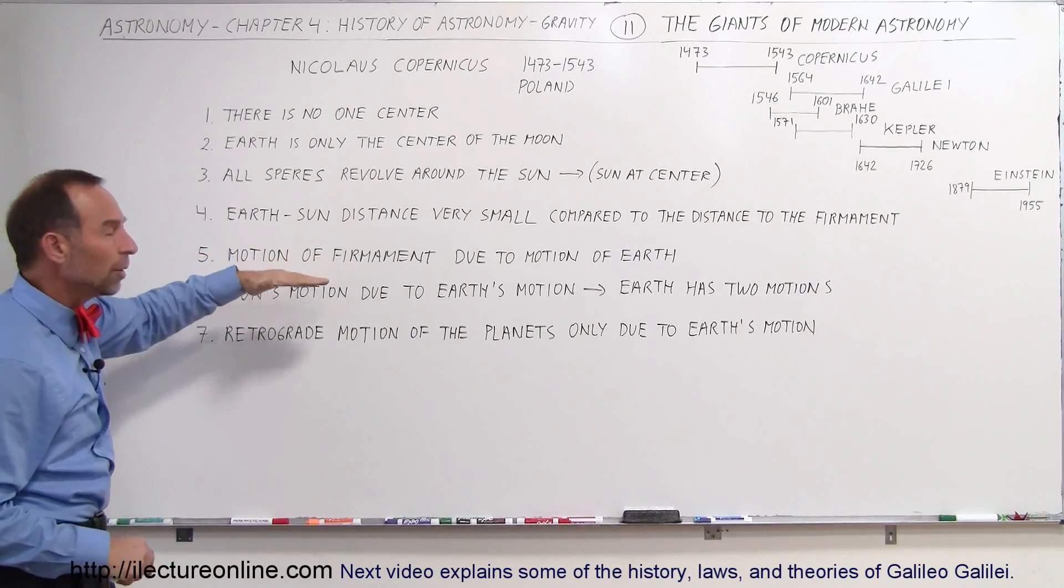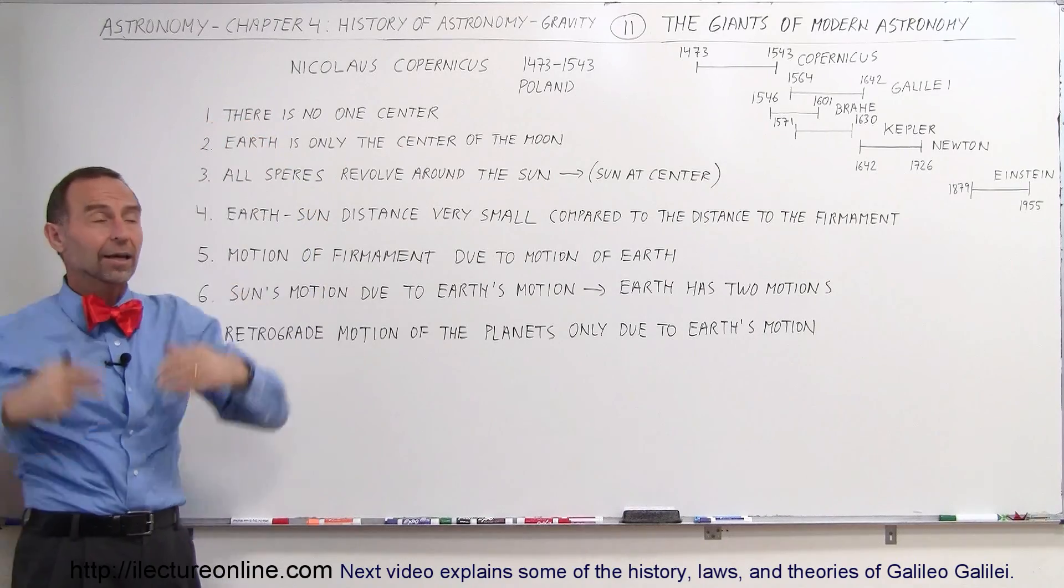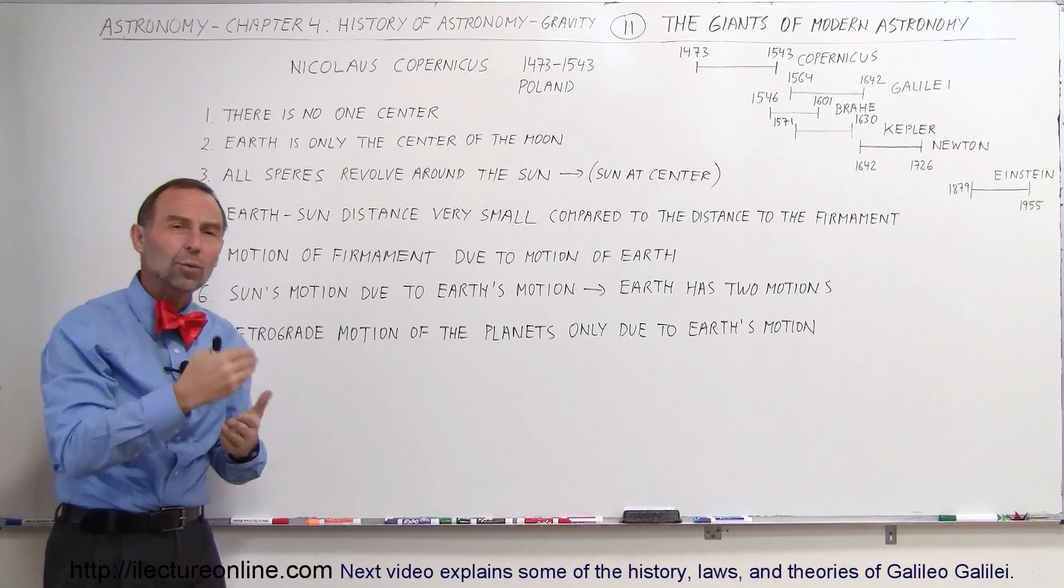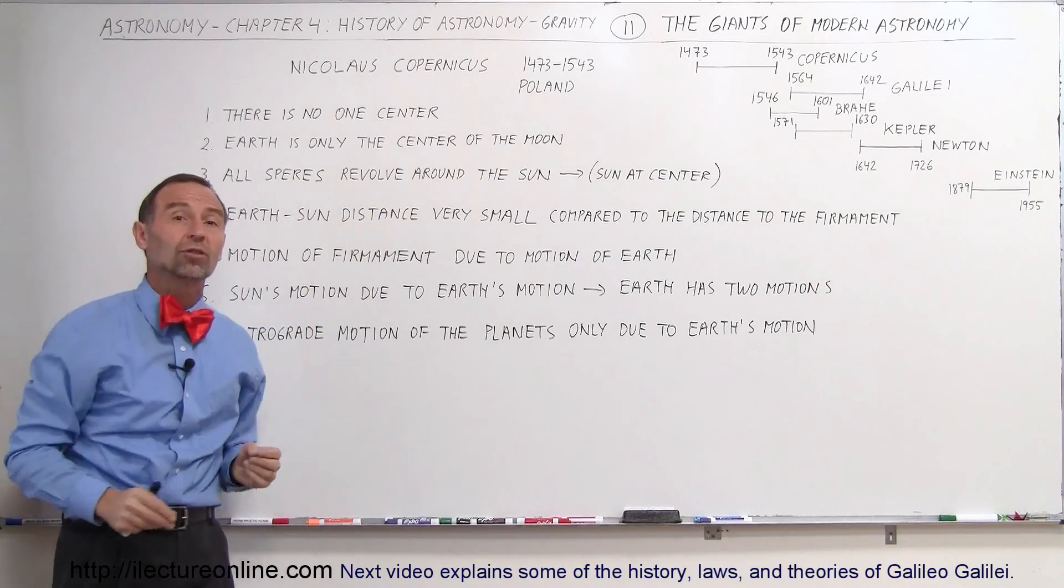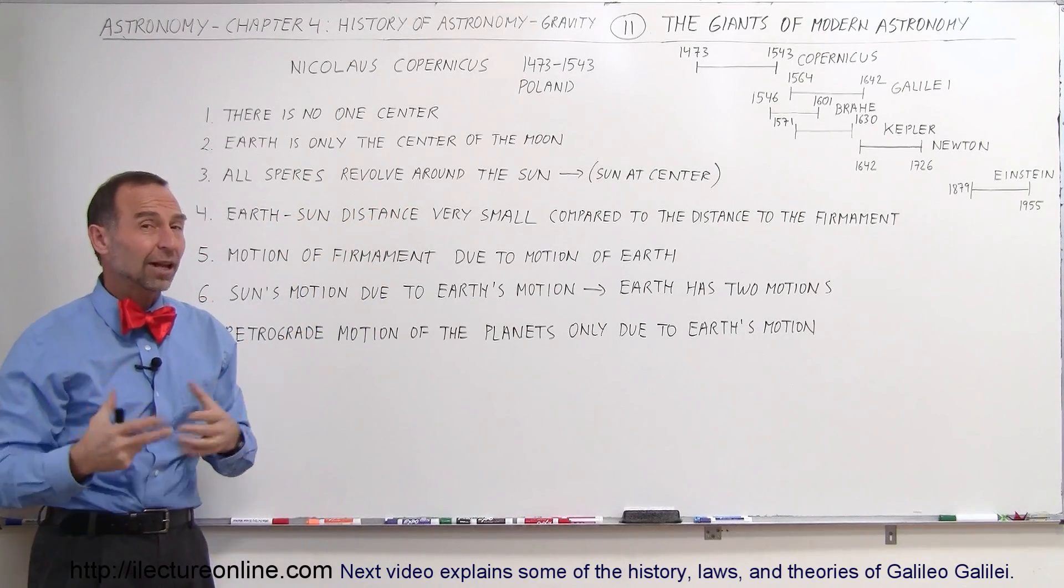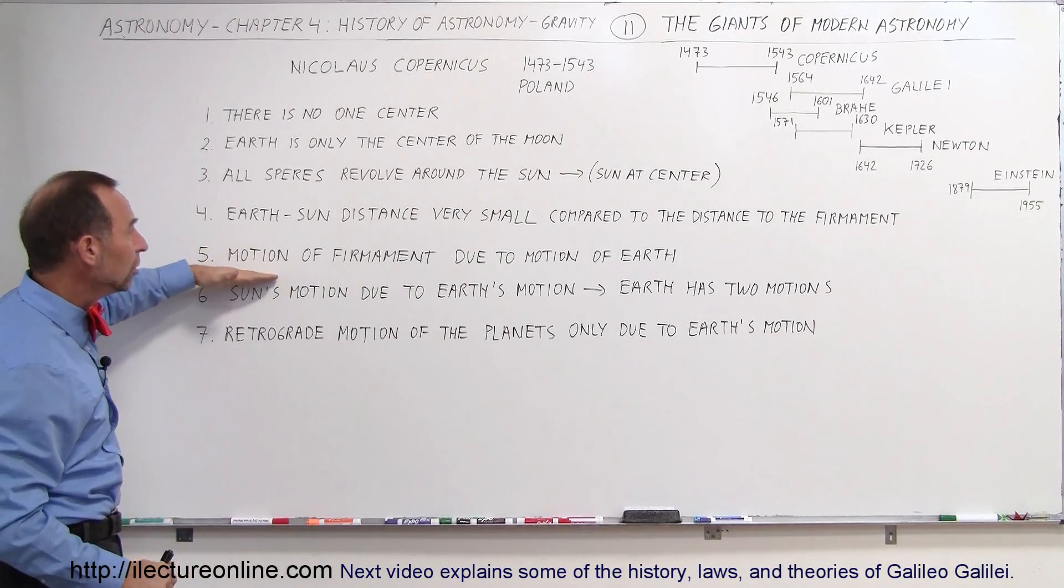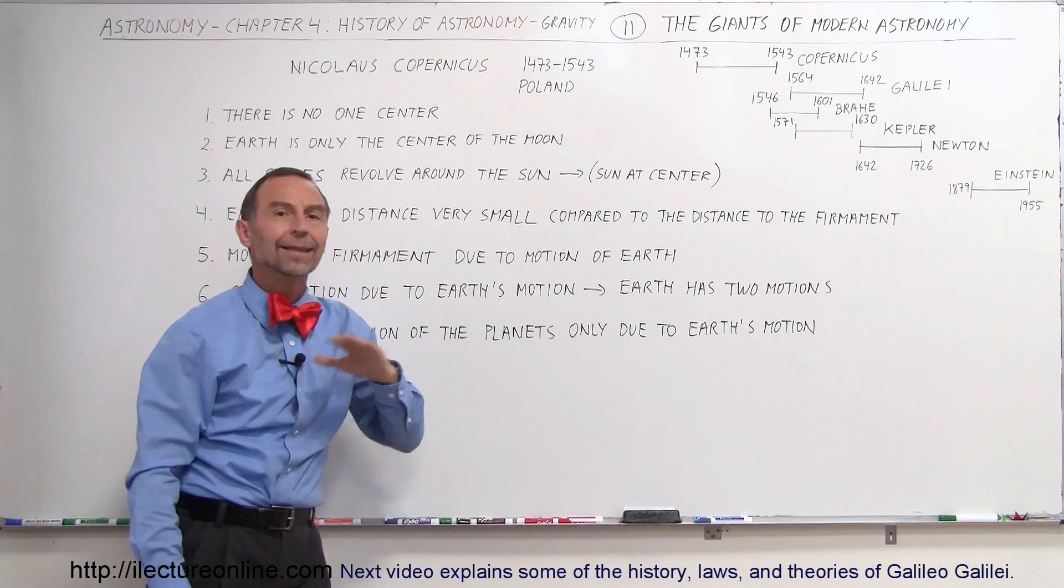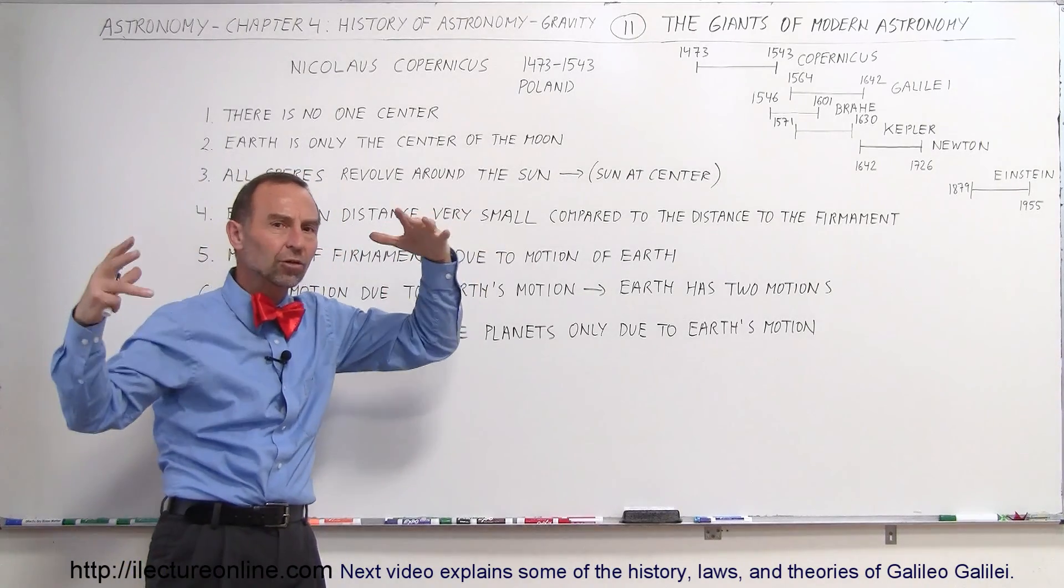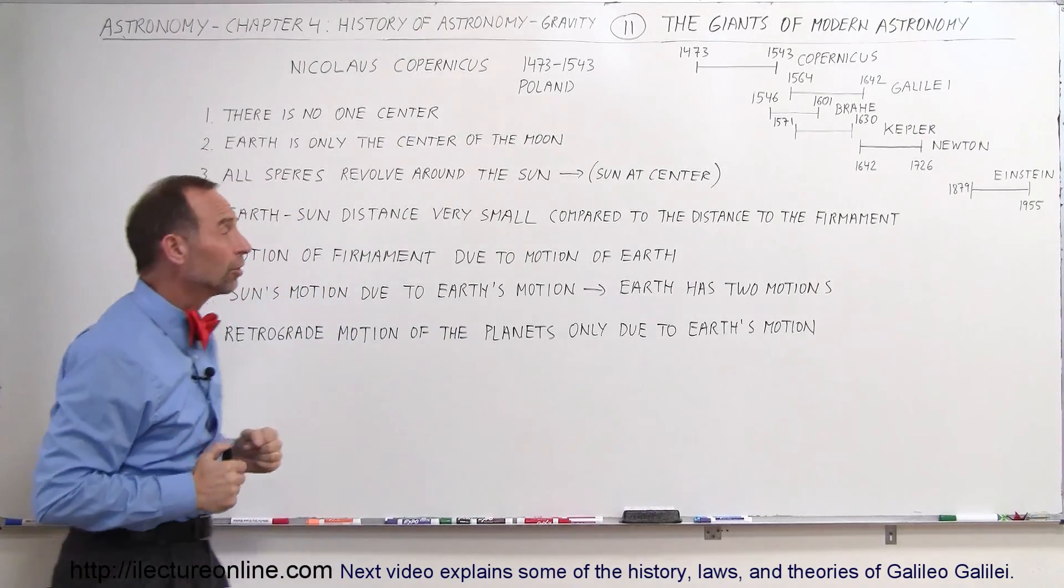Then he said that the motion of the firmament, because every night we go out and we see the stars move across the sky, and we go out from day to day, week to week, month to month, and we know that the stars and the constellations appear in different portions of the sky at different times of the night and different times of the year. He said that all that motion, the motion of the firmament, is simply due to the motion of the Earth, nothing else. The firmament isn't moving around the Earth, it simply looks like it's moving because the Earth is moving.